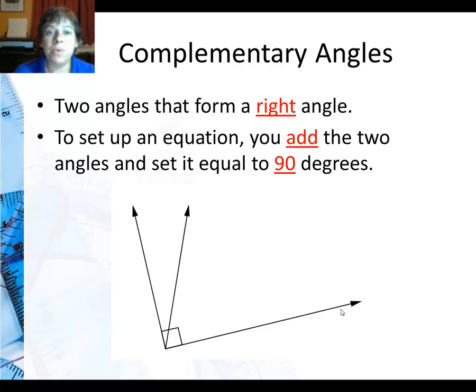So, to set up an equation, you add the two angles and set it equal to 90 degrees. So you would have this angle plus that angle, the two acute angles there, make the right angle. It equals 90.